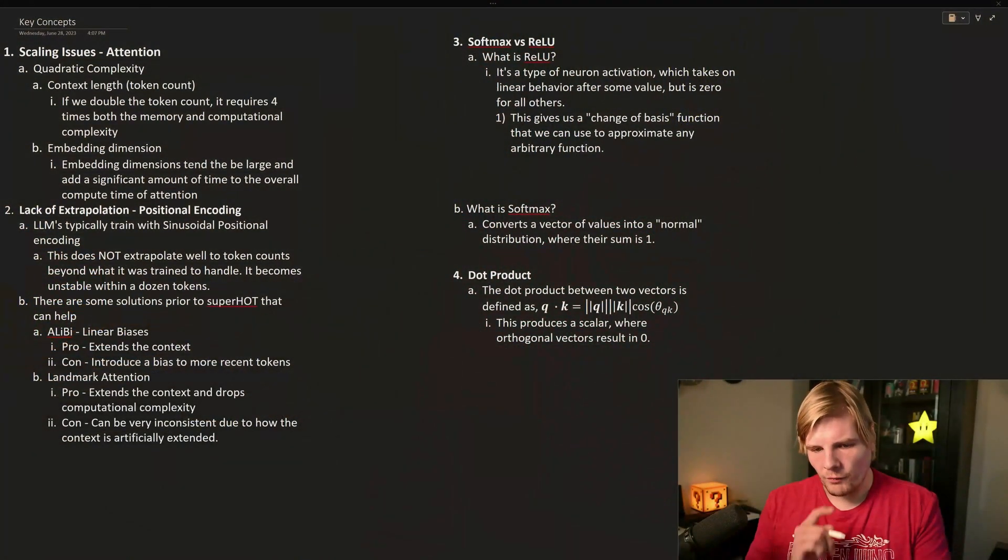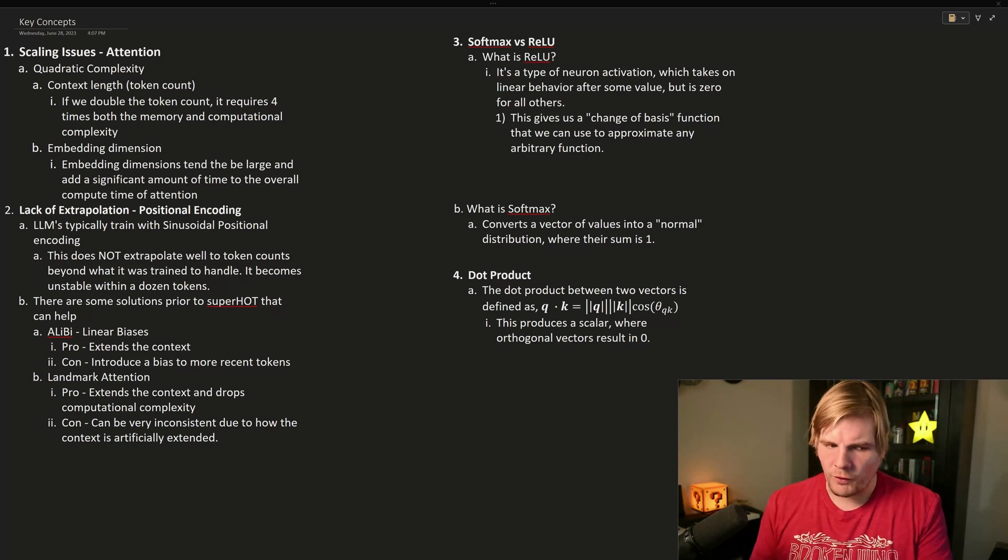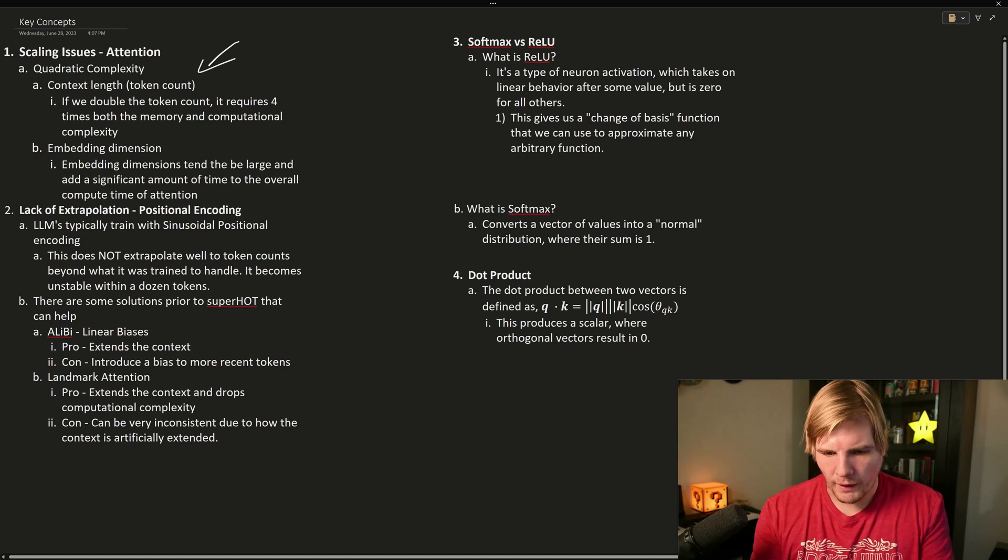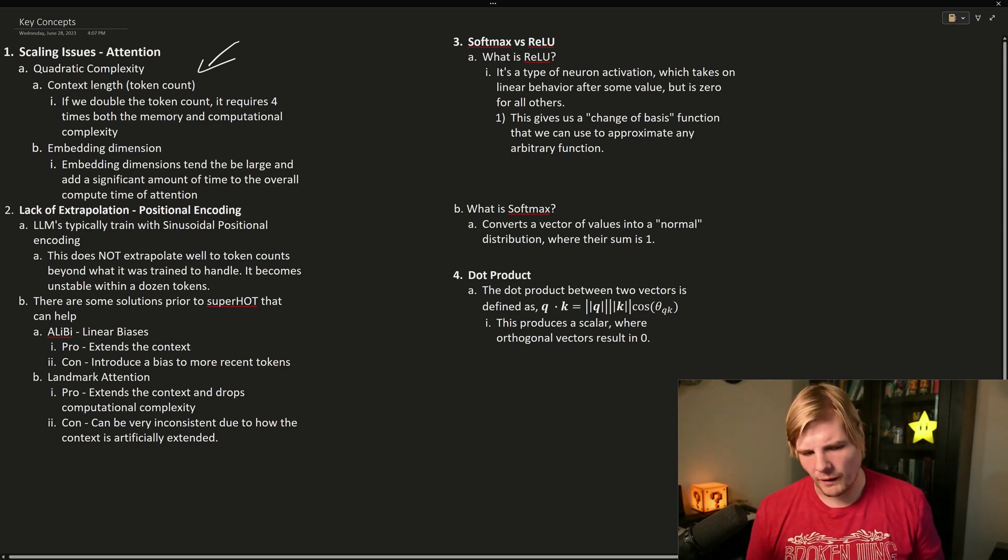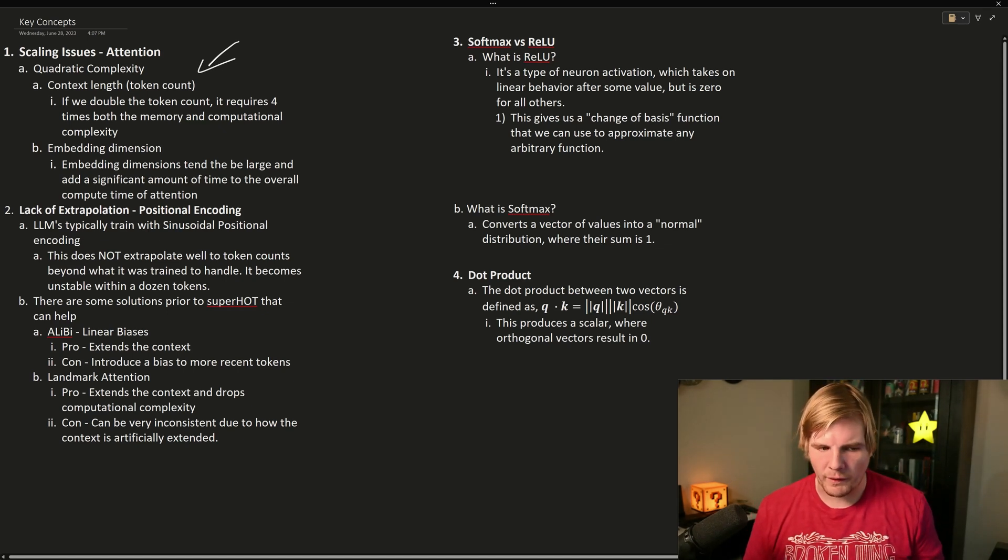We just need to review a few key concepts before we can get into the power behind Superhot. The first thing to remember is that the attention layer has quadratic complexity, so it has some scaling issues, specifically with the context length or token count, and our embedding dimension. So if we double the number of tokens, it will take four times as long to compute and take up four times the memory.